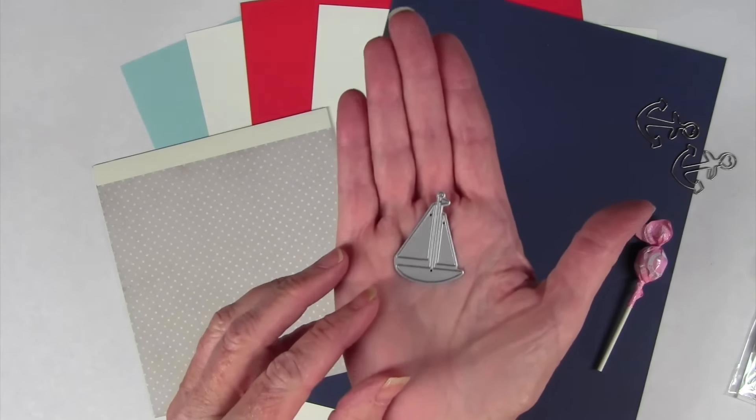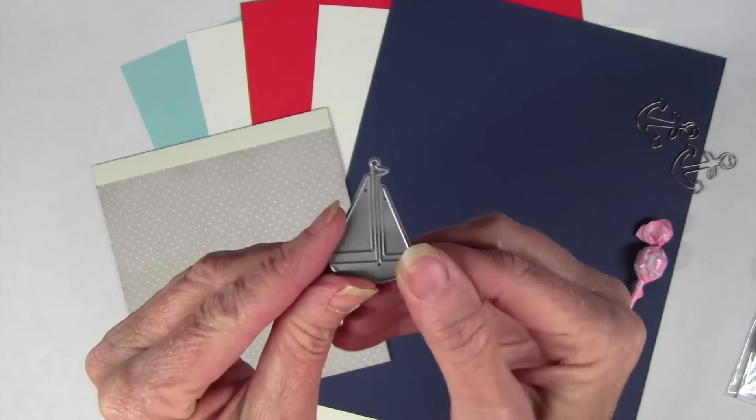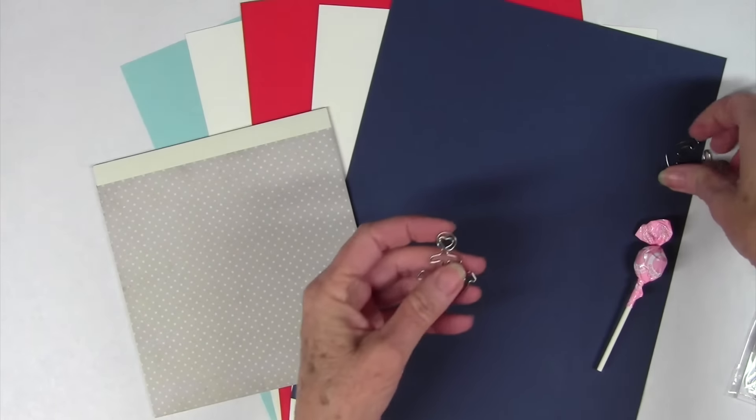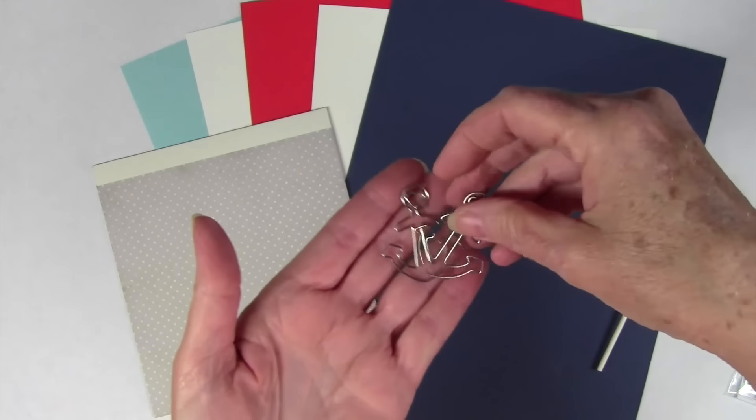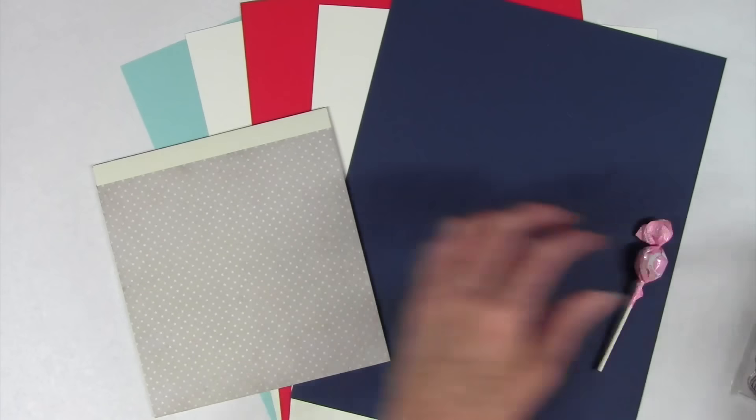You also get a little sailboat die from Simon Says Stamp and this is a really adorable size die and it cuts out in three different pieces. Also you get two anchor clips from Maya Road and these are great if you wanted to add them to some layered papers.